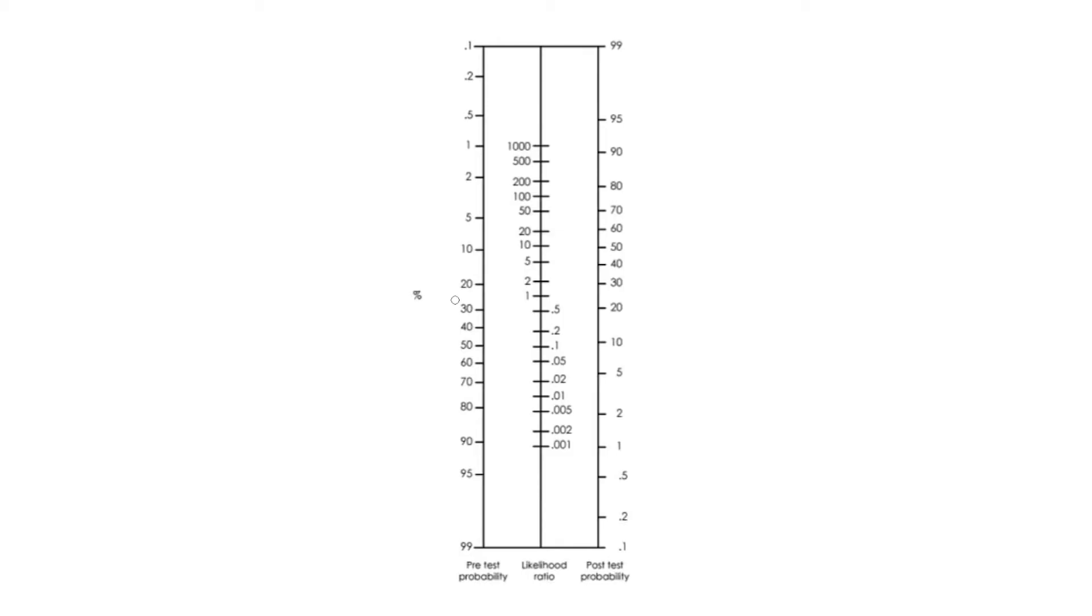With the use of the nomogram, we can quickly determine the post-test probability of our test in percentages. Mark your pre-test probability on the left of the nomogram, which is 60% in our case. Then mark the likelihood ratio of your test on the midline, which is 14 for positive Lachmann and 0.16 for negative Lachmann.